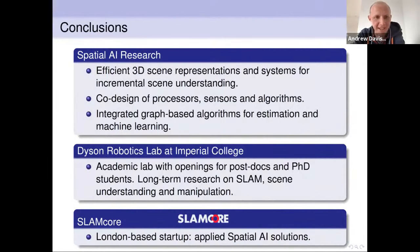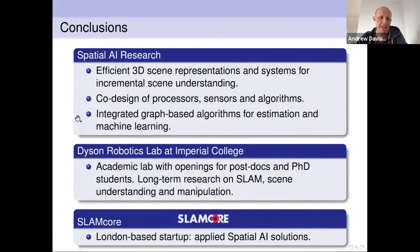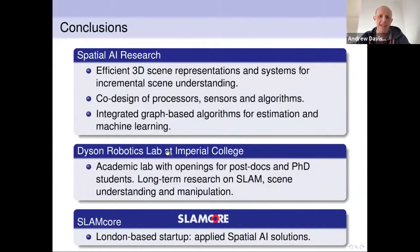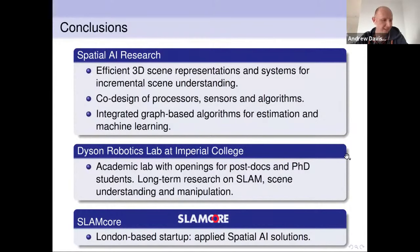To conclude: the main message is that Spatial AI research has tons of interesting problems and we're going to be working on it for a long time yet. Some of the most interesting directions are efficient 3D scene representations and systems for incremental scene understanding, co-design of processors, sensors, and algorithms, and integrated graph-based algorithms for estimation and machine learning. I'm leading the Dyson Robotics Lab — an academic lab at Imperial College funded by and collaborating with Dyson on applications in home robotics, including scene understanding and manipulation — and I'm also co-founder of SLAMCORE, a startup in London doing applied Spatial AI. Thank you very much.